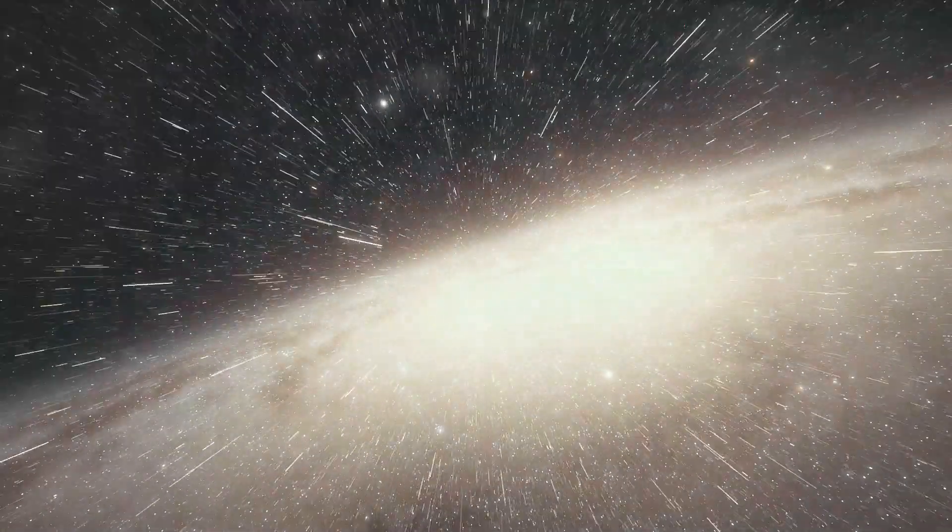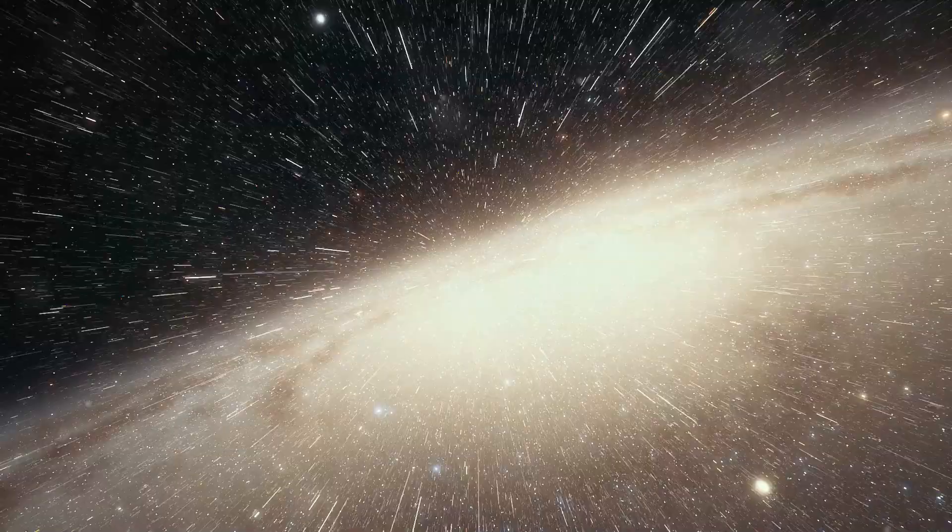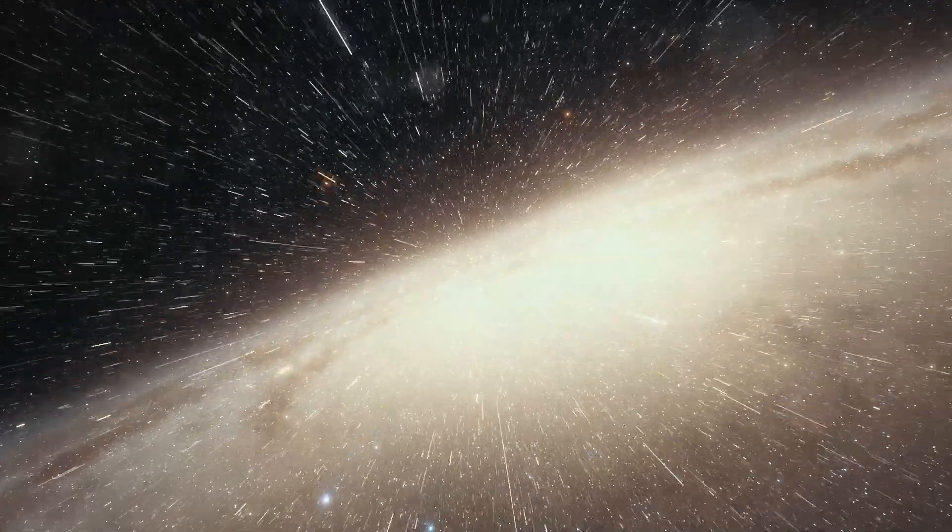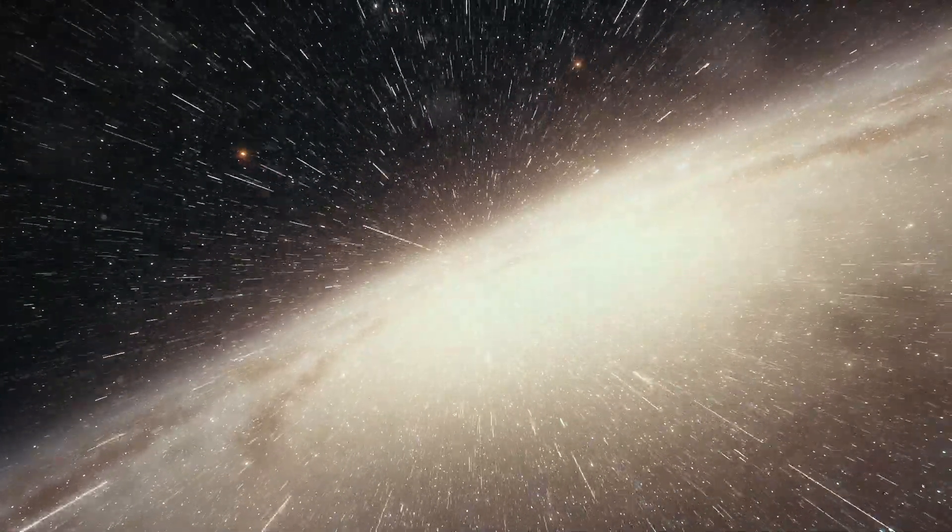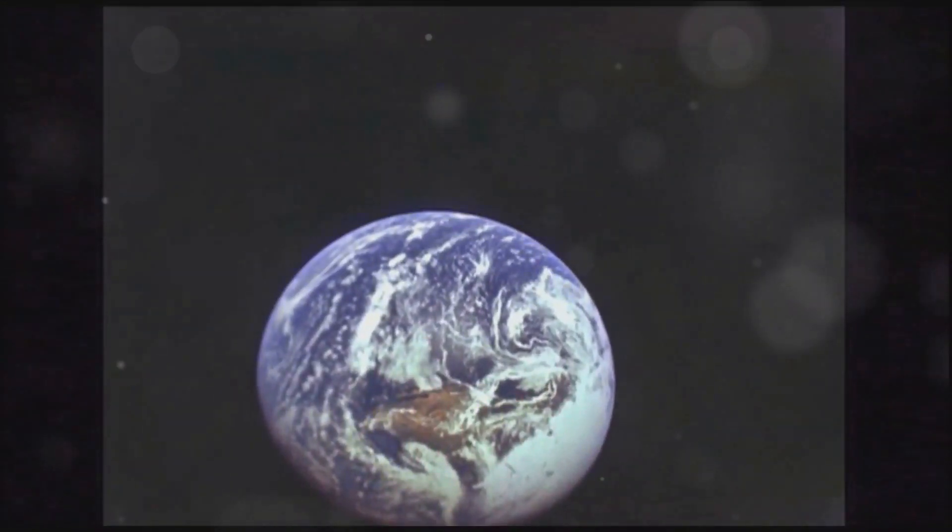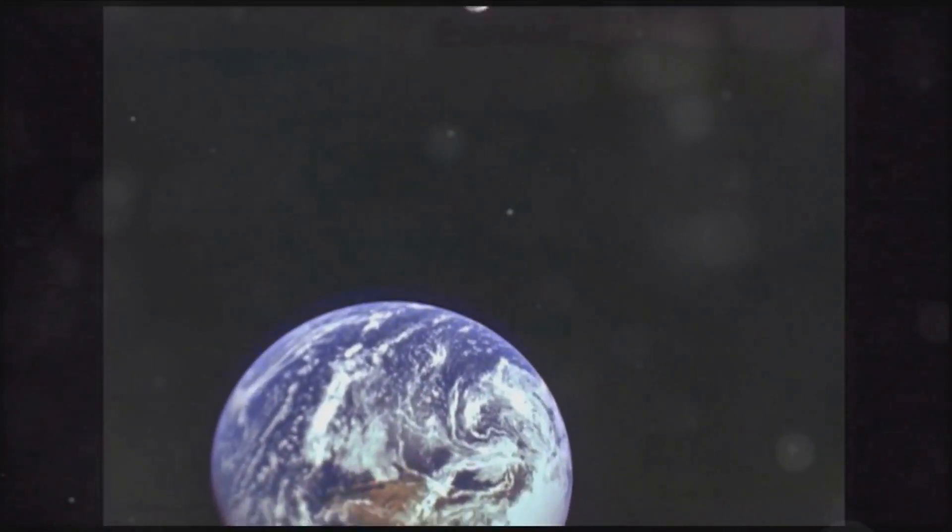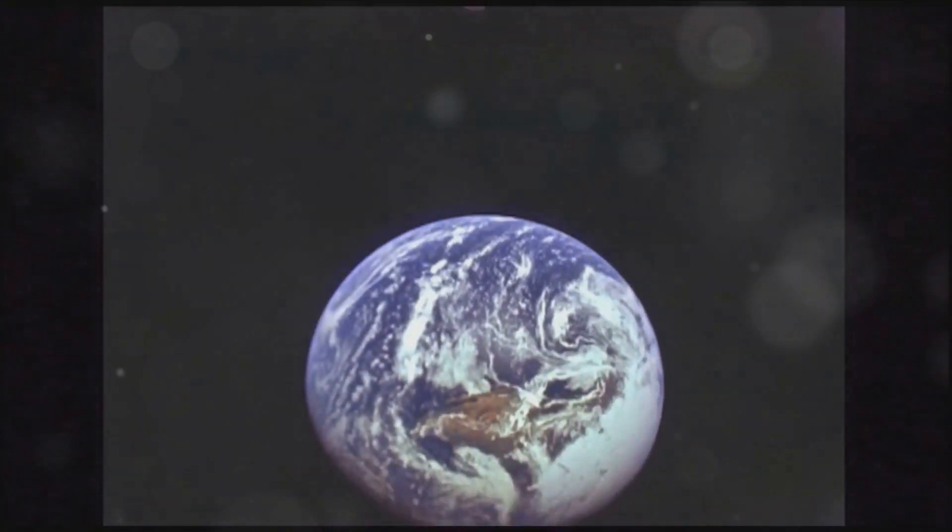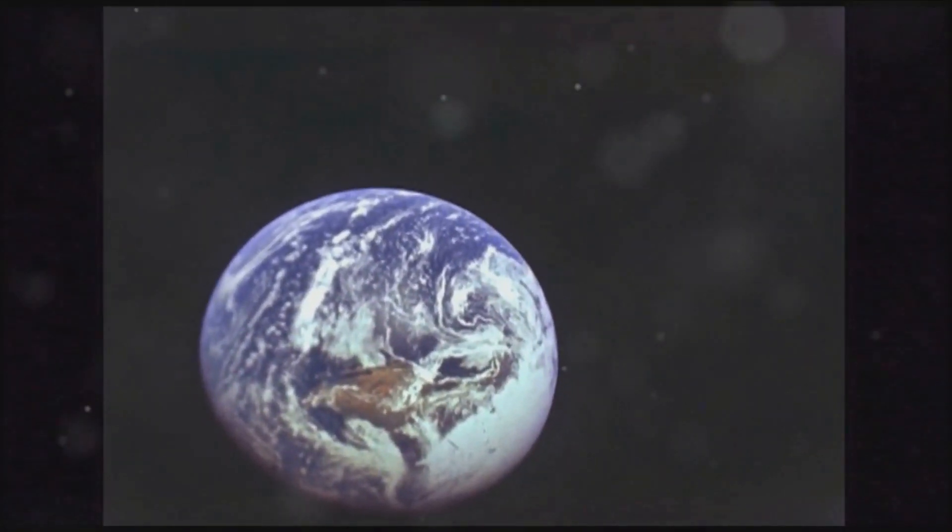Firstly, let's try to grasp the staggering speed of light. To put things into perspective, the speed of light is roughly 186,000 miles per second. Now that's quite a number to wrap our heads around, isn't it? Picture this: if we were to travel at the speed of light, we could circle the Earth's equator about seven and a half times in just one second.